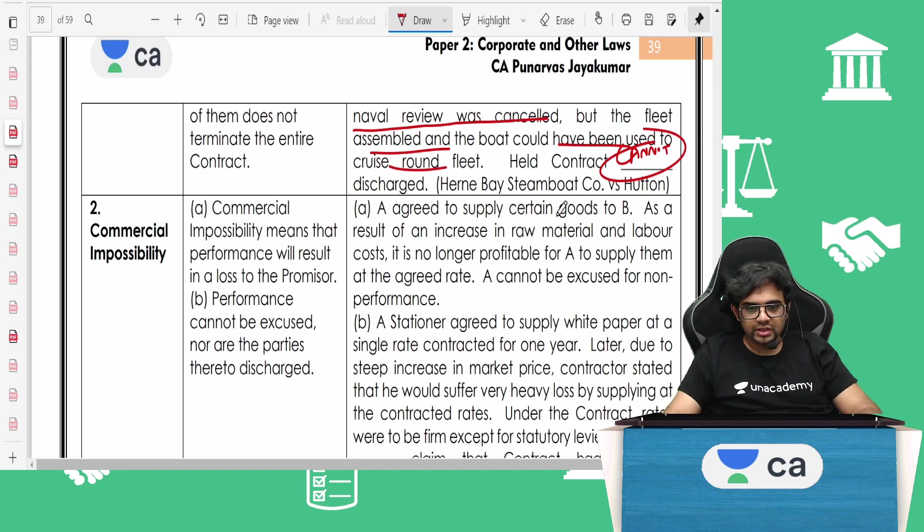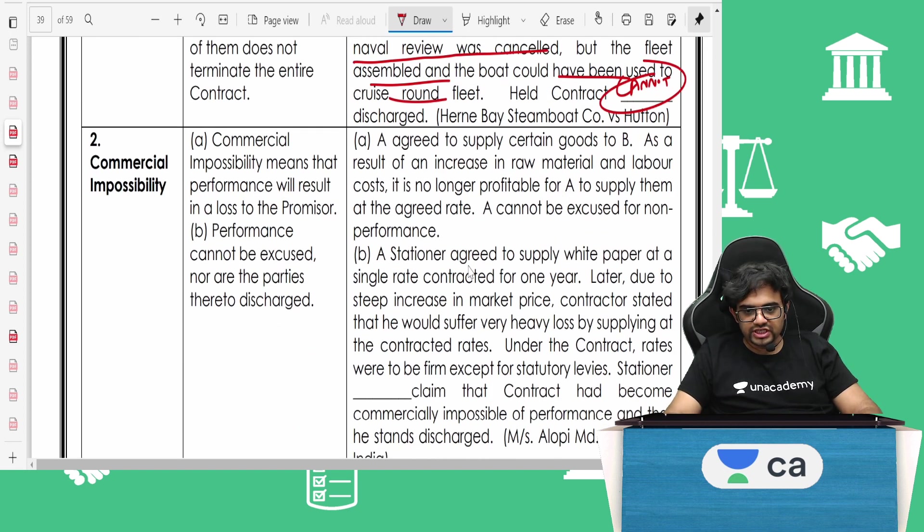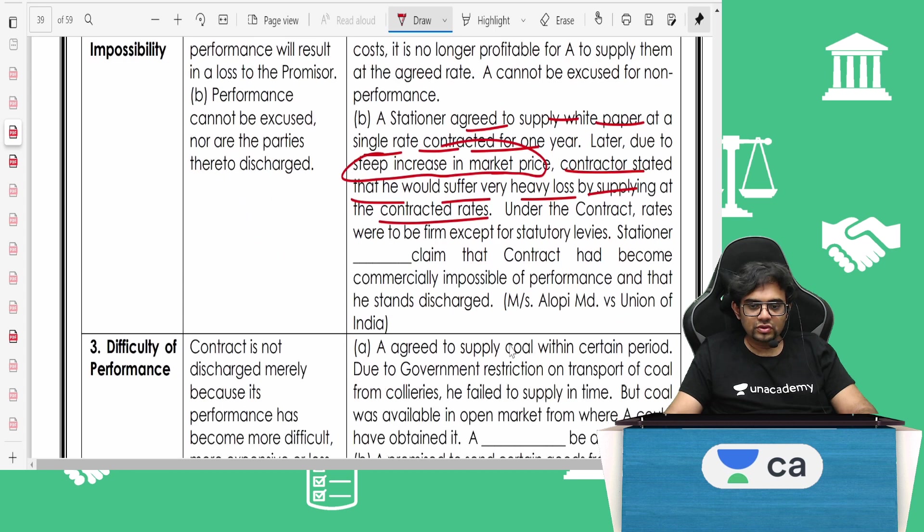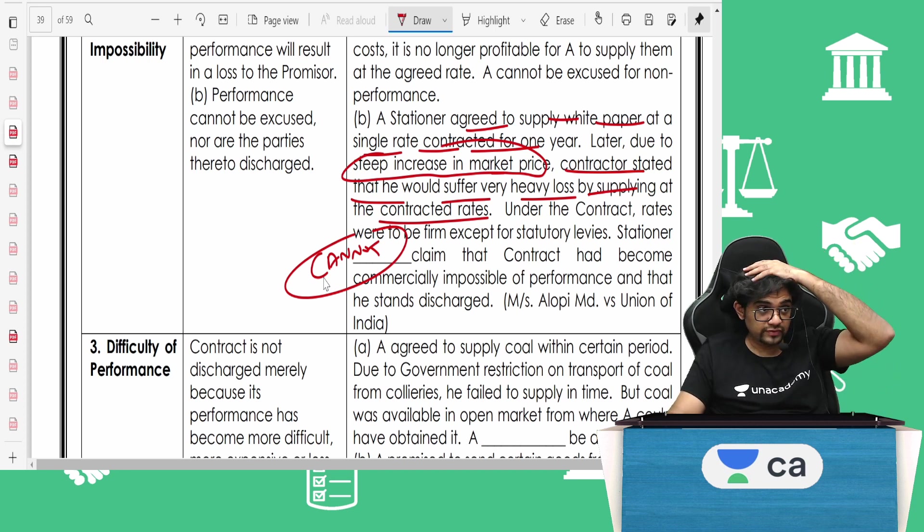Commercial impossibility. A stationer agreed to supply white paper at a single rate at a contracted price for one year. Later, due to an increase in the market price, supplier did not give. I don't care. You should have considered all that and only then given me a quote. Due to a steep increase in market price, contractor stated that he would suffer very heavy loss by supplying at the contracted rates. So, stationer cannot claim that the contract can be discharged. I don't care. You should have thought about all this before even coming to me.